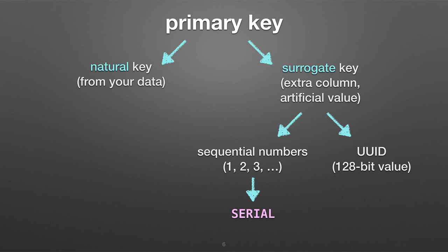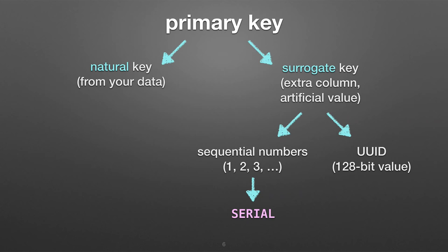So why do we need this? Well, there are primary keys in your database. Every row needs to have an identifier. There are two ways to do that. A lot of people like to use natural keys — you look in your data and see if there's data that uniquely represents every row. For example, an employee table might have employee IDs handed out by your company that you could use as the primary key.